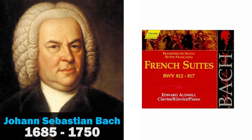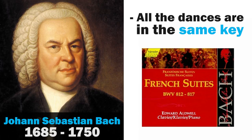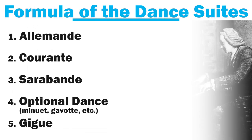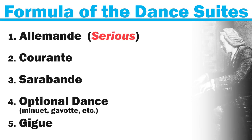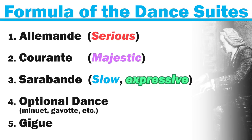Bach wrote a set of six French suites and we're just going to be talking about the first of the set in today's video. In each suite, all of the dances are in the exact same key, and that just provides unity between the dances. He starts us off with a serious allemande, followed by a majestic courant, then a slow and expressive sarabande. This is true for all six of the French suites.